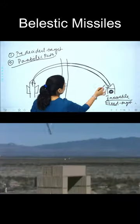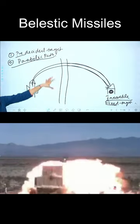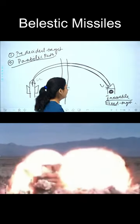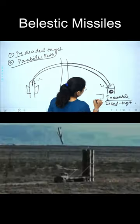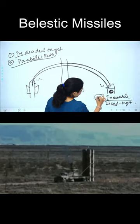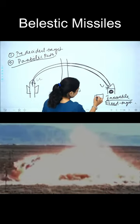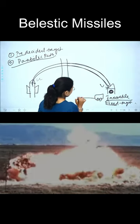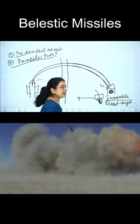What is the parabolic path? You must have to destroy the tank here. But if the pre-decided tank has moved from here, the missile will be launched into the empty space.